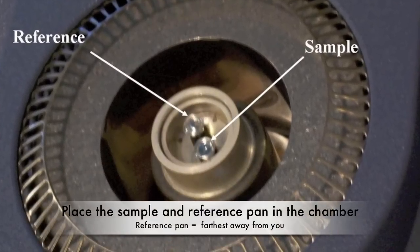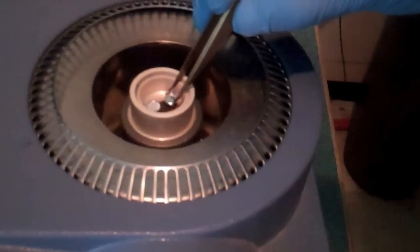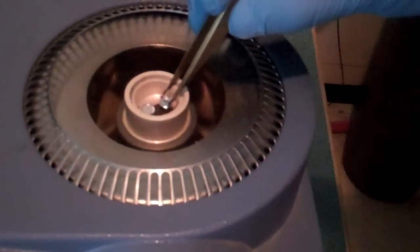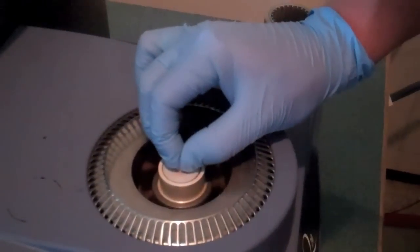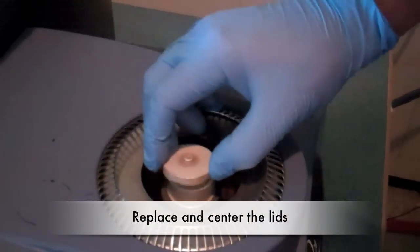There are two pan positions inside the chamber, one for the reference pan and one for the sample pan. Using the tweezers, place the reference pan in the position that is farthest away and the sample pan closer to you. Replace the inner lid, making sure it is centered. Then add the middle and the top lid.